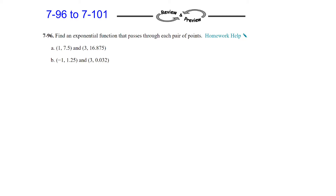Hello. Welcome to Chapter 7, Homework Questions 96 to 101. Question 96: find an exponential function that passes through each pair of points. There are two examples, and I'm going to do each of them a different way so you can see the different versions of how you could do this.